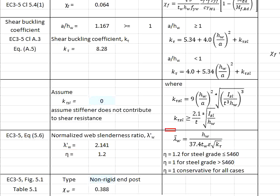As for the lambda prime w, you require k_tau. To get the k_tau, you have to refer to the EC3 part 5, clause A.3.